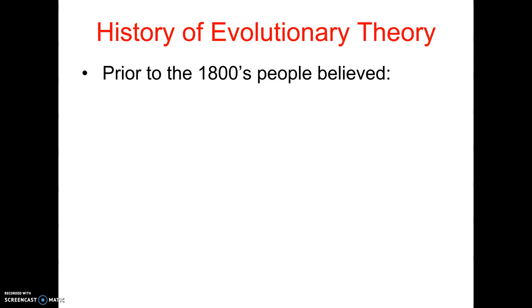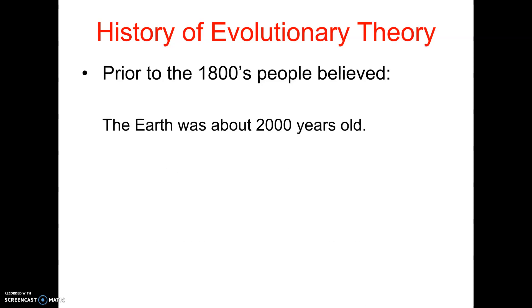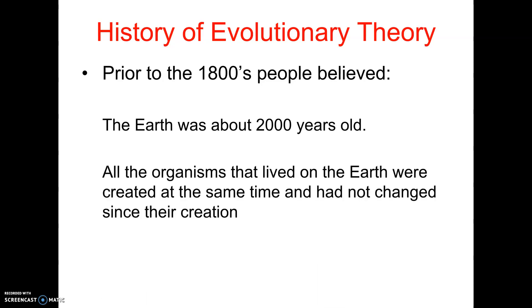Let's talk about how the modern theory of evolution came about. Prior to the 1800s, people believed the Earth was about 2,000 years old, and every single organism on Earth was exactly the same as it had always been. Every living thing was created at the same time, and all living things looked exactly the same as they did from the day they were created — there had been no changes at all.